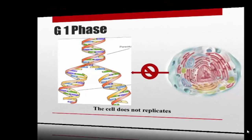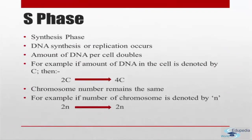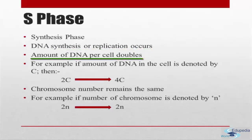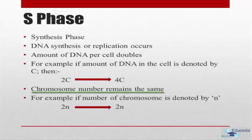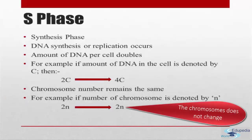The next phase is the synthesis phase. It marks the period during which DNA synthesis or replication takes place. During the synthesis phase, the amount of DNA per cell doubles. For example, if the amount of DNA in the cell is denoted by C, then 2C is enhanced to 4C, which implies that the amount of DNA per cell is doubled. However, the chromosome number remains the same — if the number of chromosomes is denoted by N, then 2N remains 2N after the S phase. Hence, the chromosome number does not change during the synthesis phase.